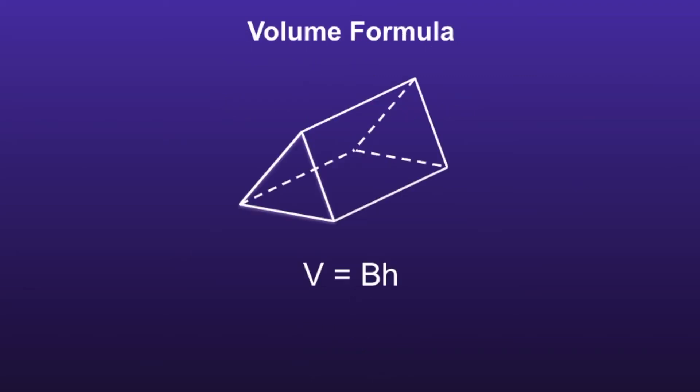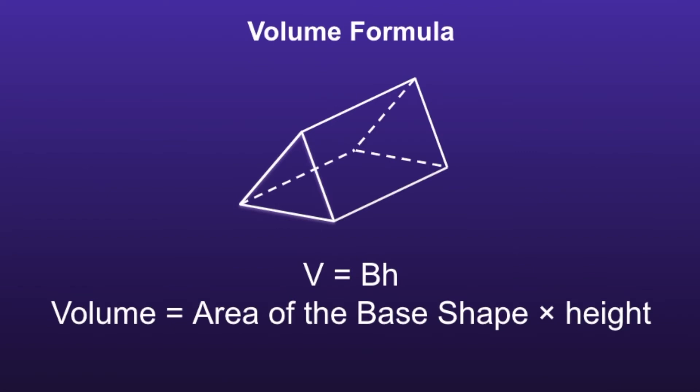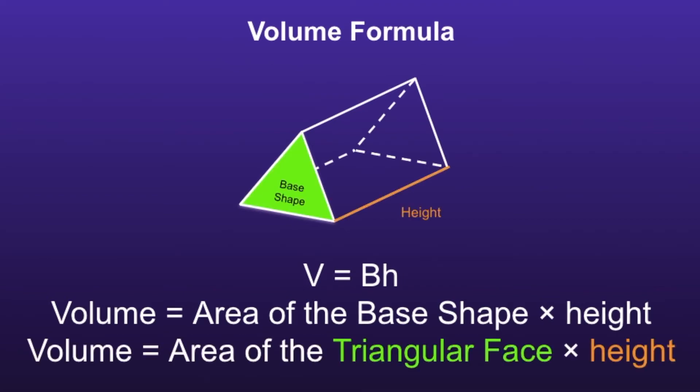Volume Formula. The formula to find the volume of a triangular prism is V equals B times H, which means volume equals the area of the base shape times the height. In a triangular prism, the base shape will always be the triangular face. So we need to find the area of the triangular face and then multiply that by the height of the prism.